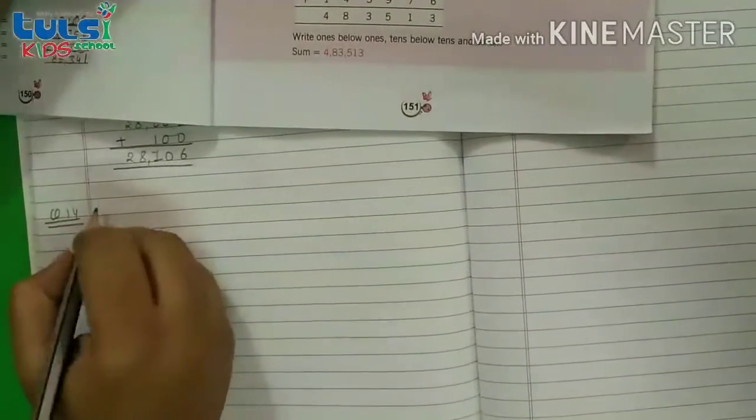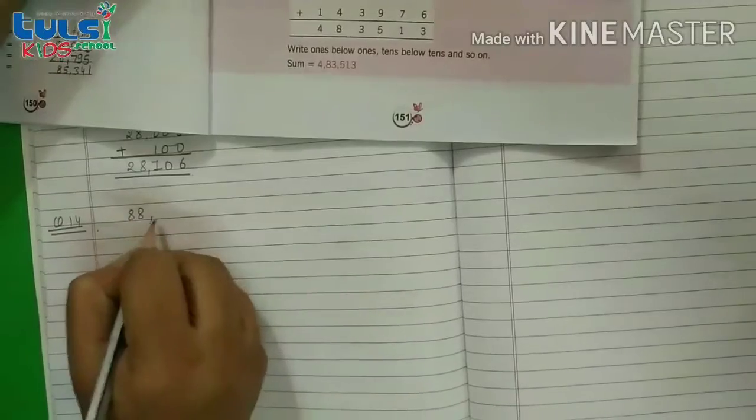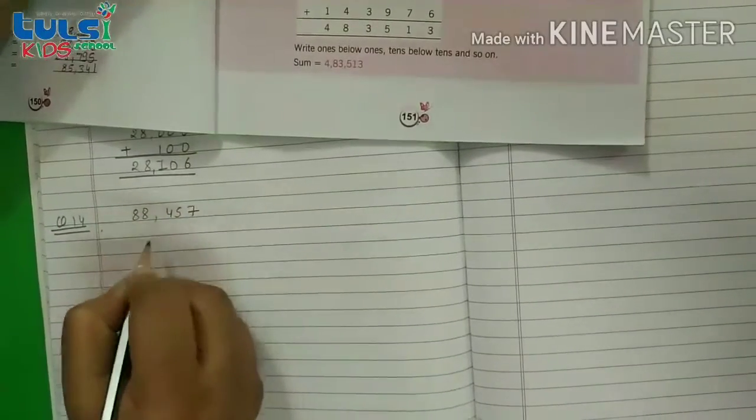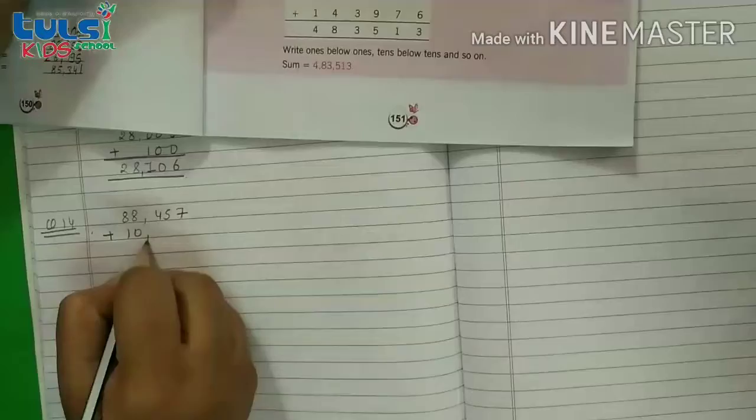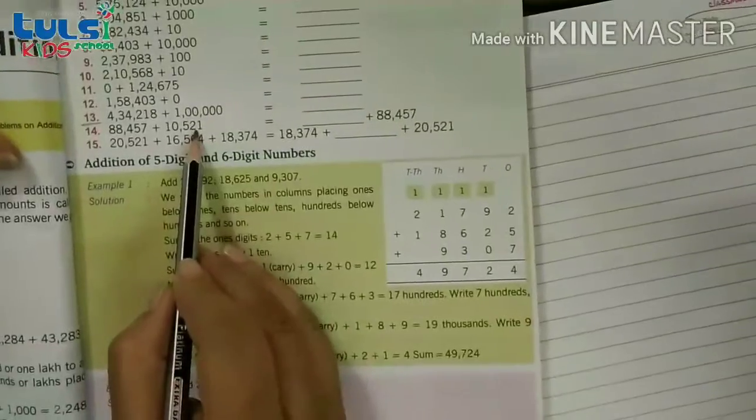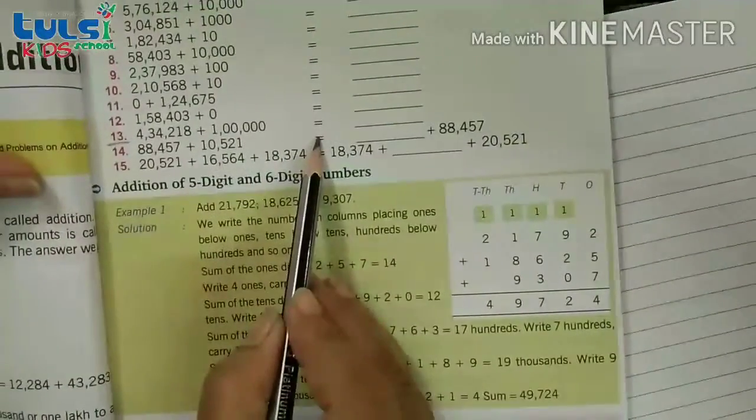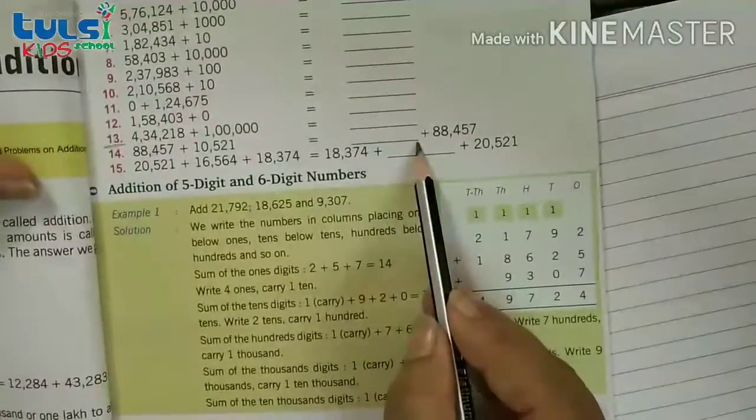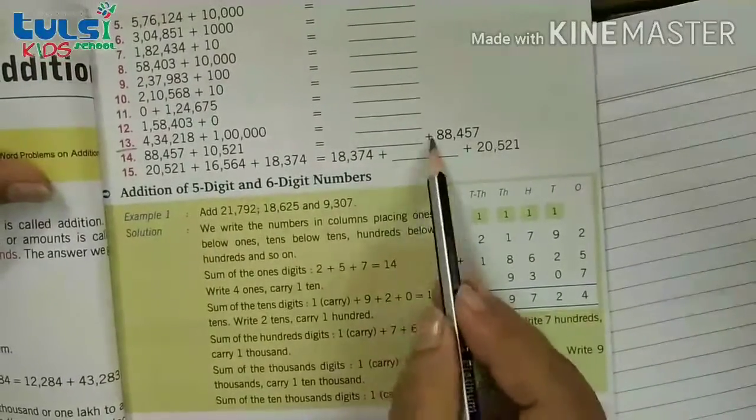Question number 14 me aap log ko dhiya hua hai 88457 plus 10521. In douno ka plus jab karta hai, tab joh answer aeega, usmei agar ye plus karta hai, toh doonu equal ho jata hai. Toh iska maatlab yehaan per kya aeega? 10521.